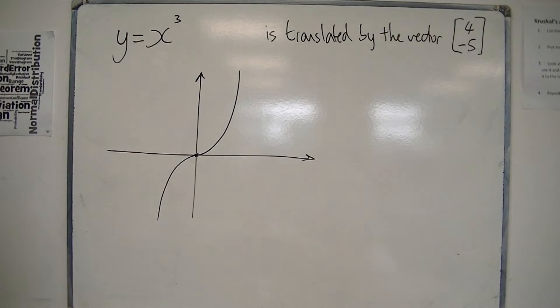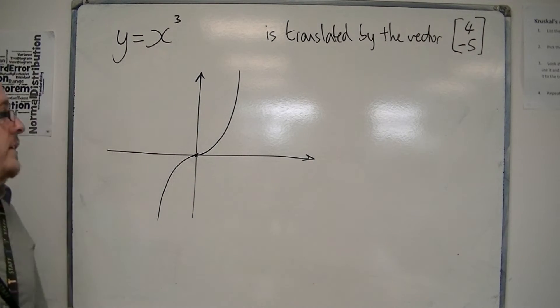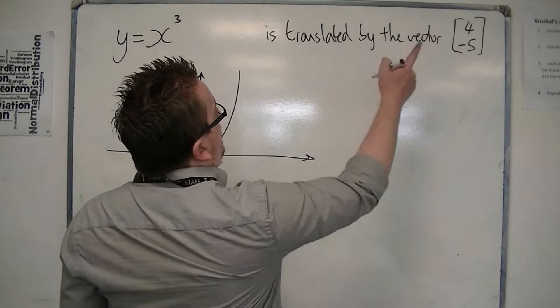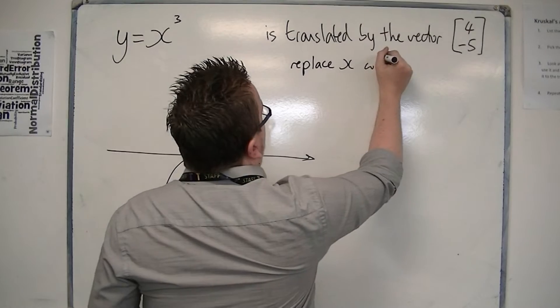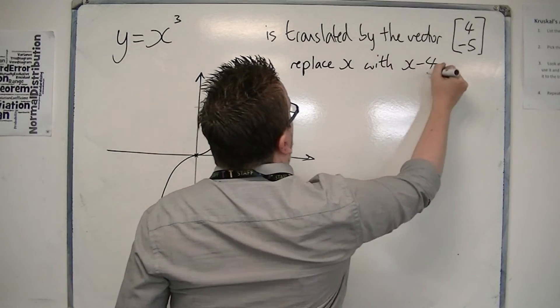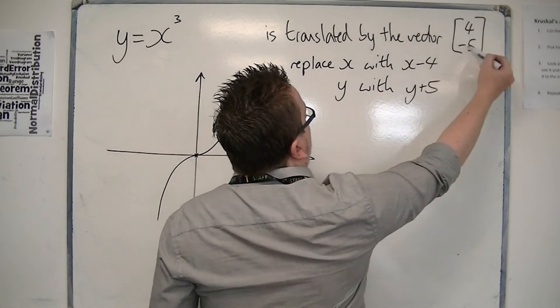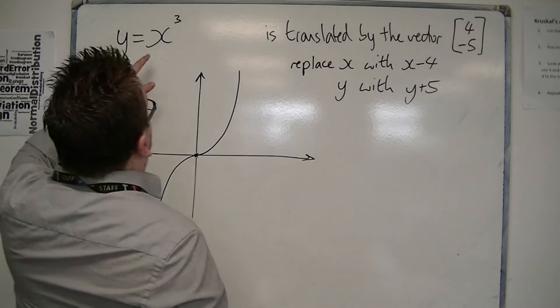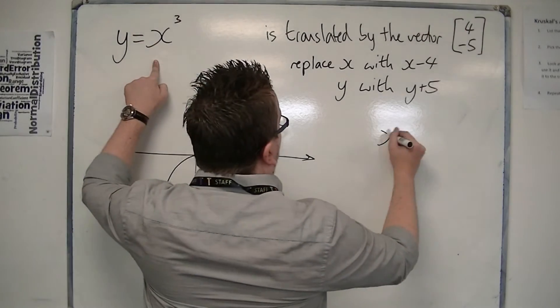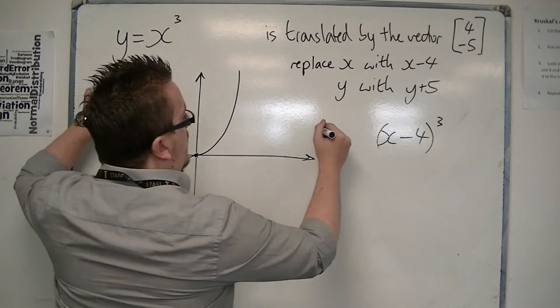You could say it's translated by the vector 4 minus 5. And when we looked at translating curves, it meant that I would be replacing x with, in this case, x minus 4. And you'd replace the y with y plus 5. So you'd change the signs effectively. So the x becomes x minus 4, and the y becomes y plus 5.